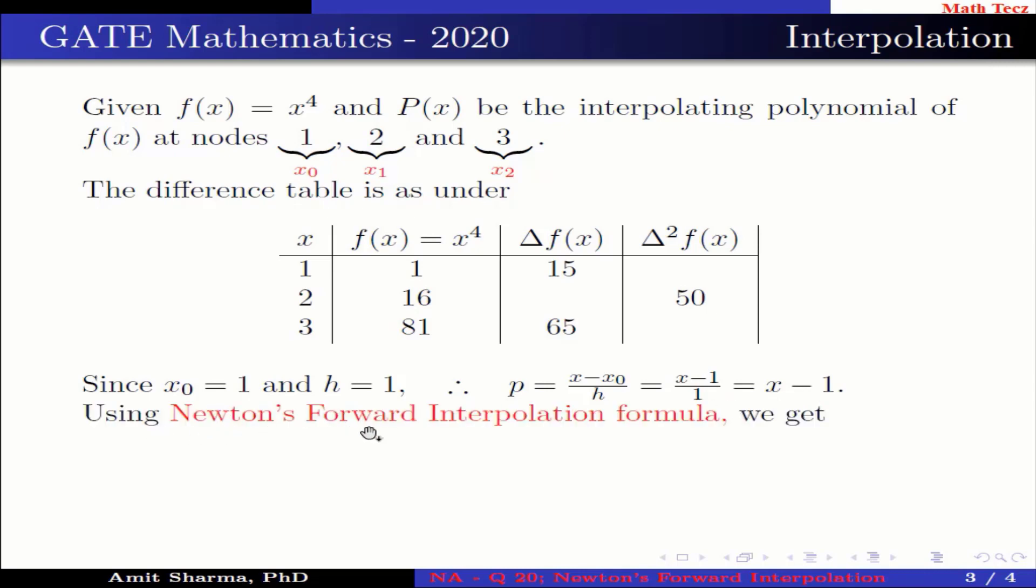Now using Newton's forward interpolation formula, we get P(x) = y0 + p·Δy0 + [p(p-1)/2!]·Δ²y0 and so on.